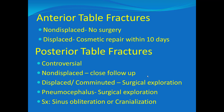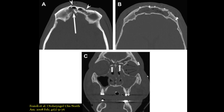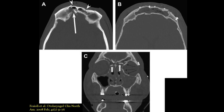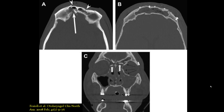Some surgeries that can be done include sinus obliteration or cranialization. I borrowed a case from the literature showing, in panel A, a fracture of the anterior and posterior walls of the frontal sinus. In panel B, the repair has packed the cavity with fat and stripped the mucosa. Panel C shows they blocked the naso-frontal ducts. You might wonder about complications from blocking the ducts, but if you remove the mucosa, you're not producing mucus, so there's no drainage problem.